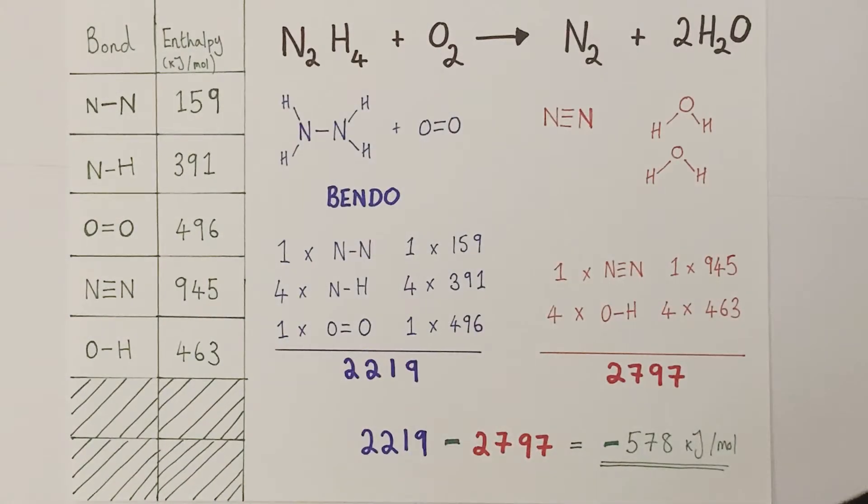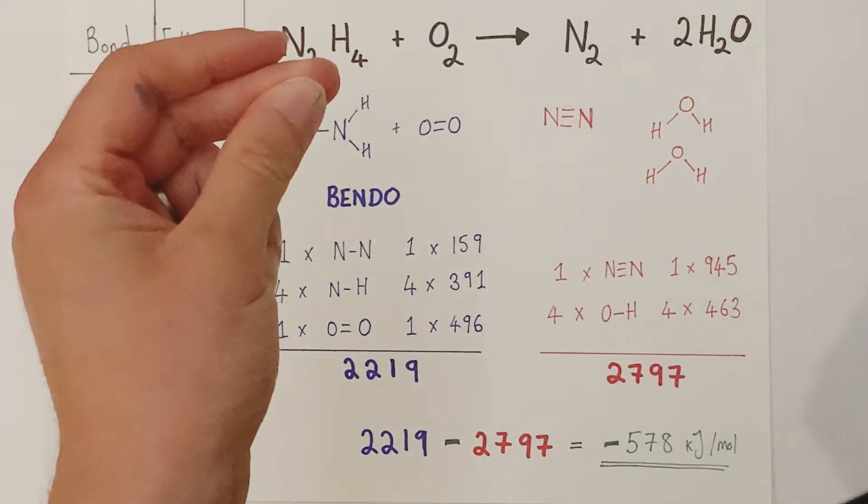So I want to finish with one more example of a bond energy calculation. And this one I've chosen on purpose because it links to a film I really enjoy, and hopefully a bit of snazzy editing I can bring an image of that film into the presentation. So the film I'm referencing here is The Martian starring Matt Damon. And hopefully if I click my fingers, an image of the film should appear now.